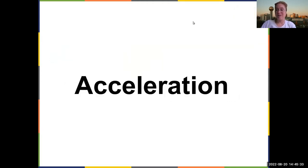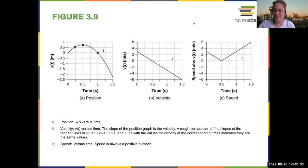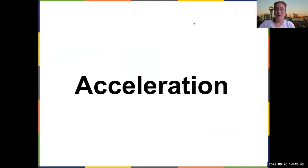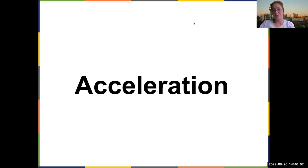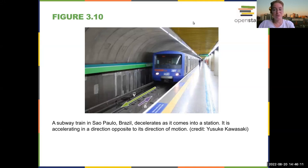Now, acceleration. The velocity is the derivative of the position versus time graph. The acceleration is the derivative of the velocity versus time graph — it's how fast something is changing. The velocity is the change in distance over time; the acceleration is the change in velocity over time. Acceleration tells you whether something is speeding up or slowing down.